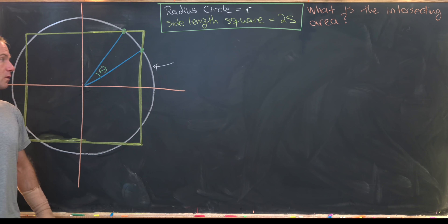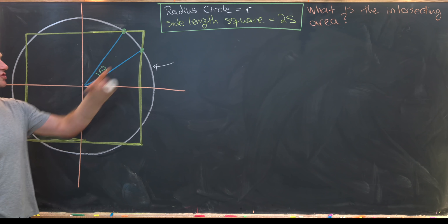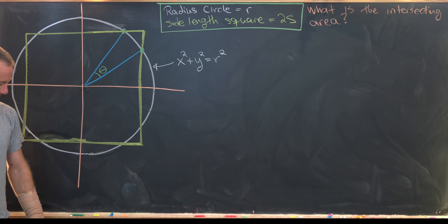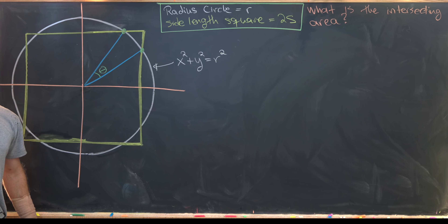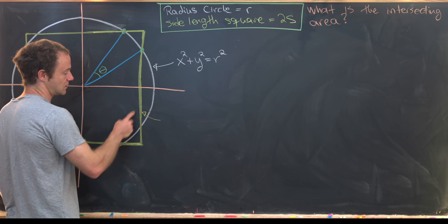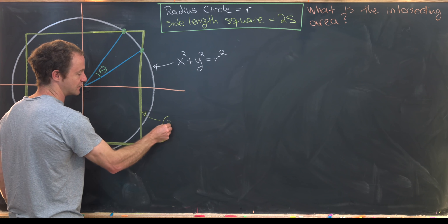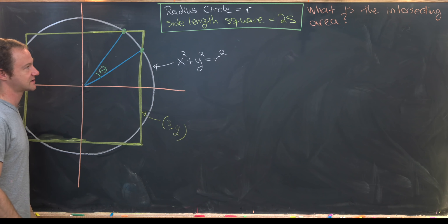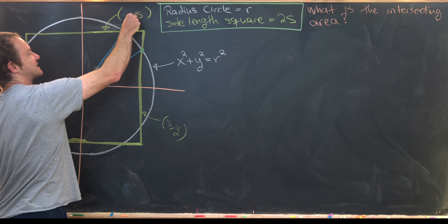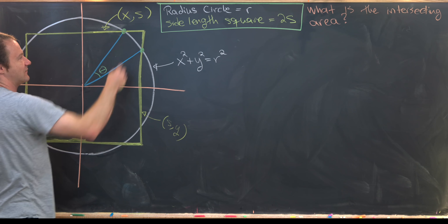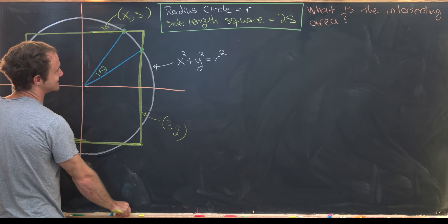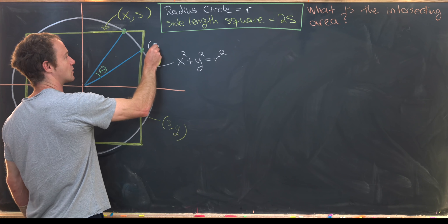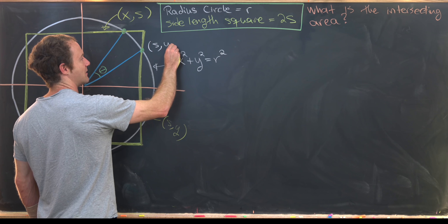Using our coordinate system, the circle is centered at the origin with radius r, so its equation is x² + y² = r². Since the square has side length 2s, every point on the right vertical edge has x-coordinate s with y ranging from −s to +s, and every point on the top horizontal edge has y-coordinate s with x ranging from −s to +s. The lower intersection point therefore has coordinates (s, y₀) for some unknown y₀.